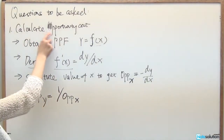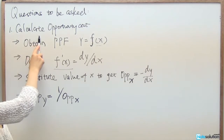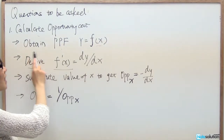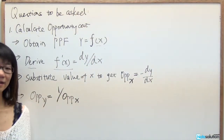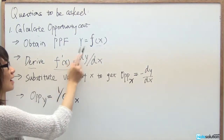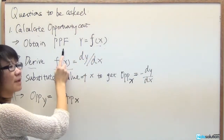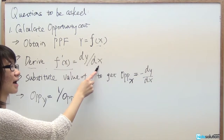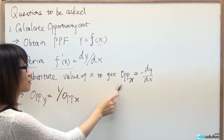For questions on calculating opportunity cost, the steps are: first, identify the PPF function where Y is expressed as a function of X. Second, calculate the first derivative dY/dX from the PPF function. Third, substitute the given value of X to get the opportunity cost of X, which equals negative dY/dX.